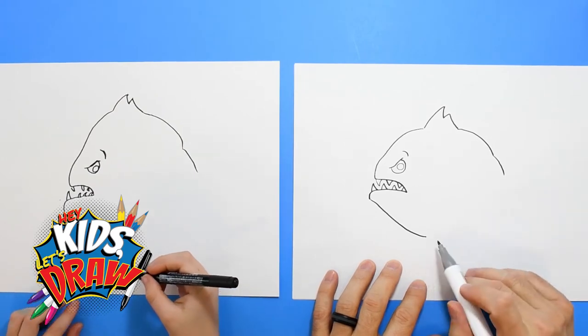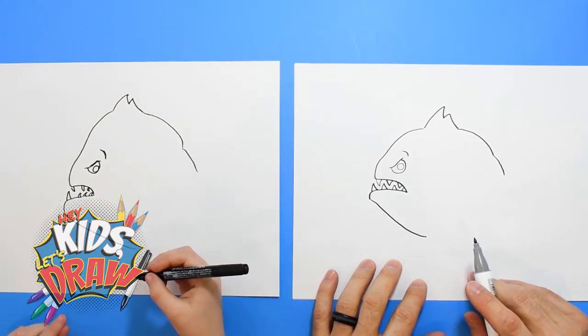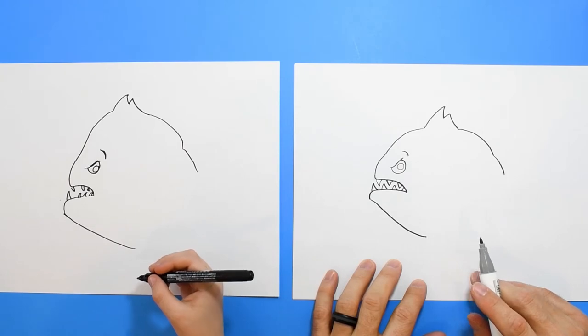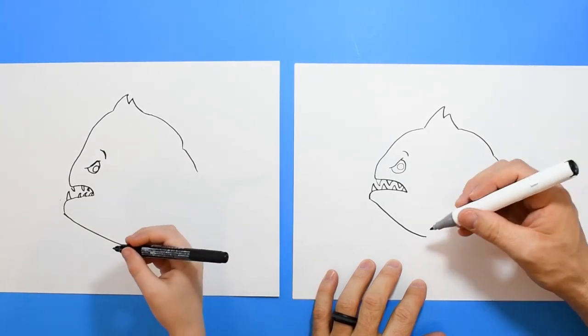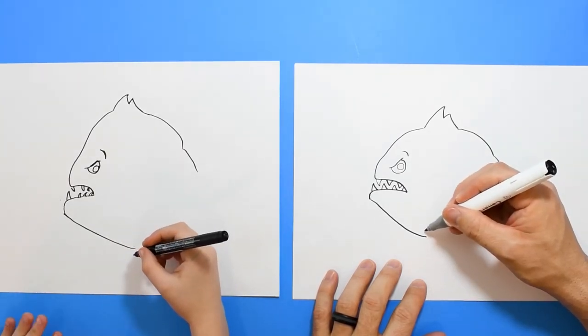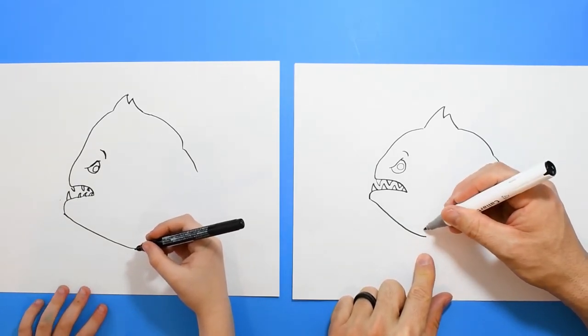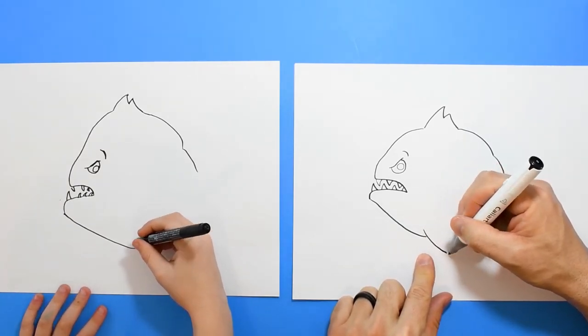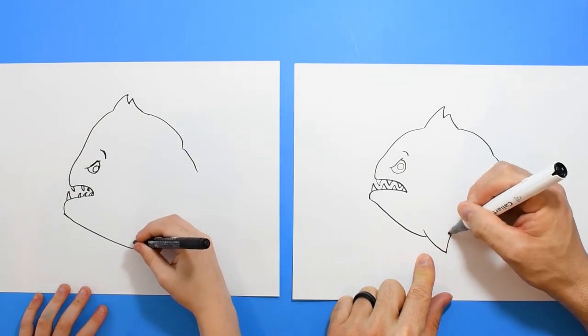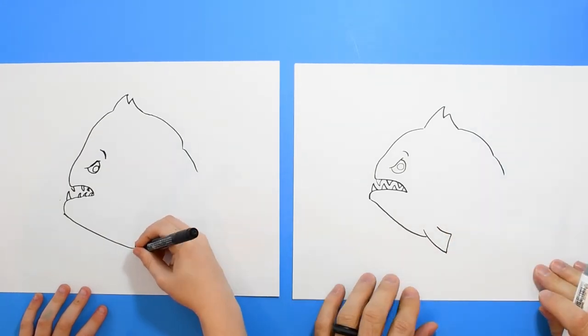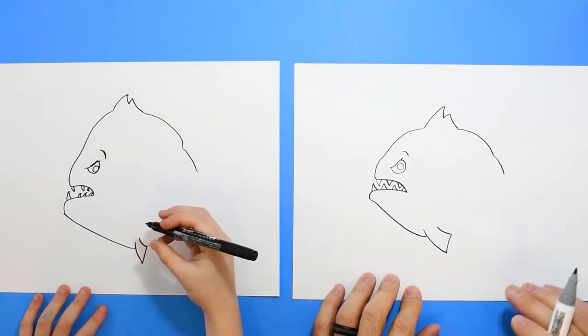And what's on the bottom here of the piranha? What do they use to swim? Flippers. Flippers or fins. More fins, right? So kind of come up. And watch what I do. We're going to draw a fin down. See that? Good. Perfect.